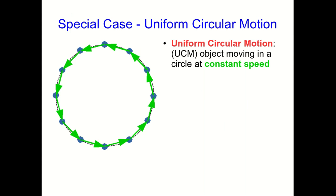Another case we'll look at in some detail is uniform circular motion. And what I mean by uniform circular motion is that we have an object that's moving in a circle, and it's moving with a constant speed.